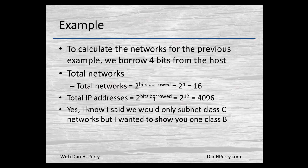The number of IP addresses in each of those networks — there are 12 bits left in the host part, so we take 2 and raise it to the number of bits remaining. There is an error on the slide: it should say 'bits remaining,' not 'bits borrowed,' for the IP addresses. That is 2 to the 12th, which gives us 4,096 IP addresses per network.